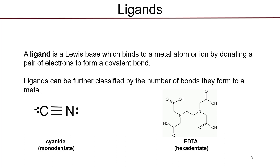EDTA is an example of a ligand. A ligand is a Lewis base which binds to metal ions or atoms by donating a pair of electrons to form a new covalent bond to the metal center. Thus, any Lewis base can be a ligand. In GenChem 2, we defined a ligand or a Lewis base as a non-metal with a pair of electrons to donate to form a bond.